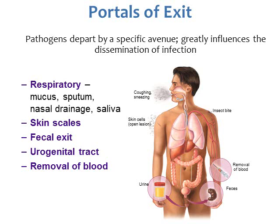Portals of exit are basically the same as portals of entry. Pathogens can depart by specific avenues and be spread to other people. There are respiratory portals of exit — mucus, sputum, nasal drainage, saliva — through coughing and sneezing. Skin scales are constantly being released. There's also feces, urine through the urogenital tract, and blood. Basically any type of body fluid or anything coming out of the body is a portal of exit.